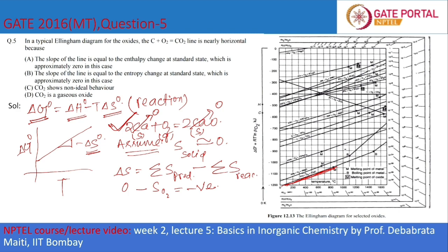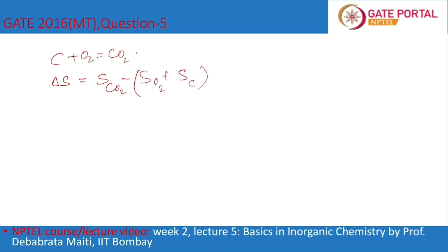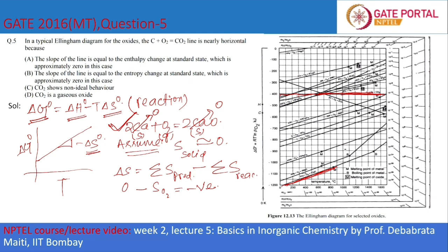Now we consider the reaction C + O₂ → CO₂, which is the horizontal line in the Ellingham diagram. For this reaction, the entropy change equals entropy of CO₂ minus entropy of O₂ plus entropy of C. Since C is a solid its entropy is zero, and since both CO₂ and O₂ are gases with one mole each, the entropy change is approximately zero. Therefore the slope is also zero, which is why the line is horizontal.